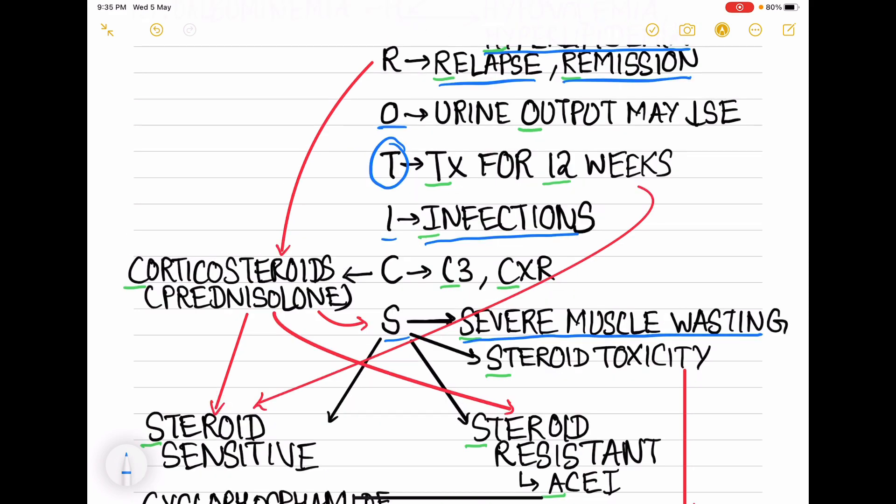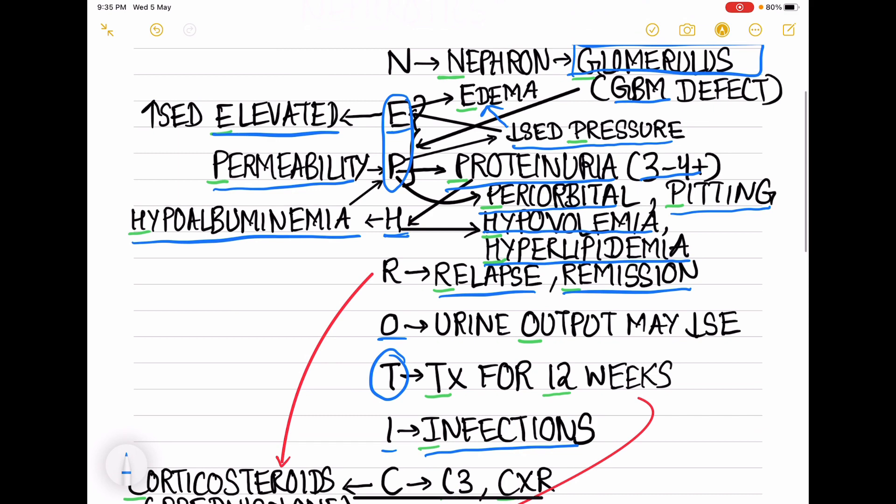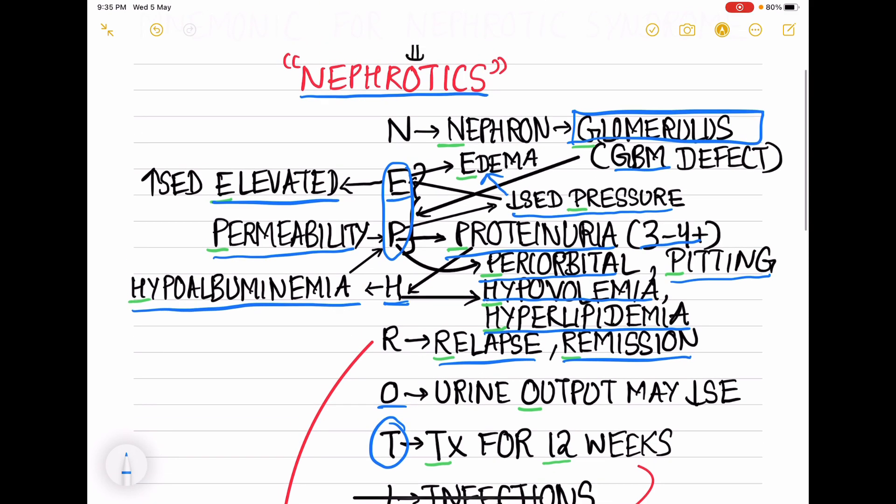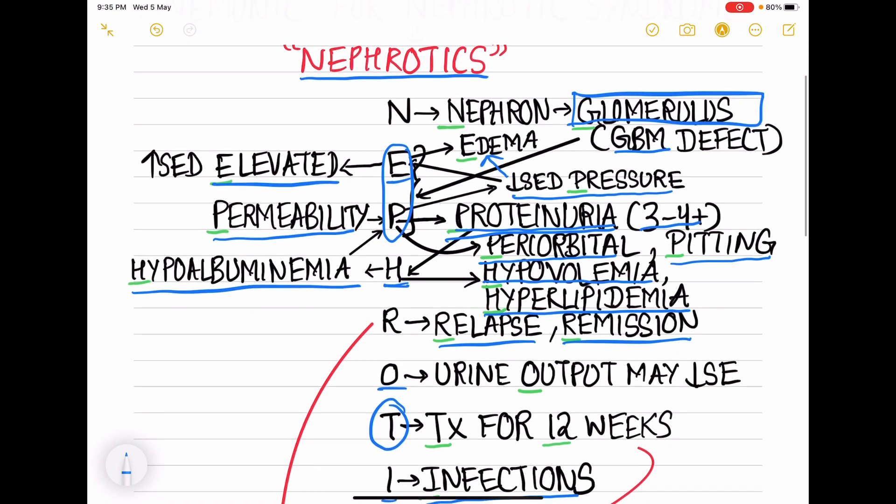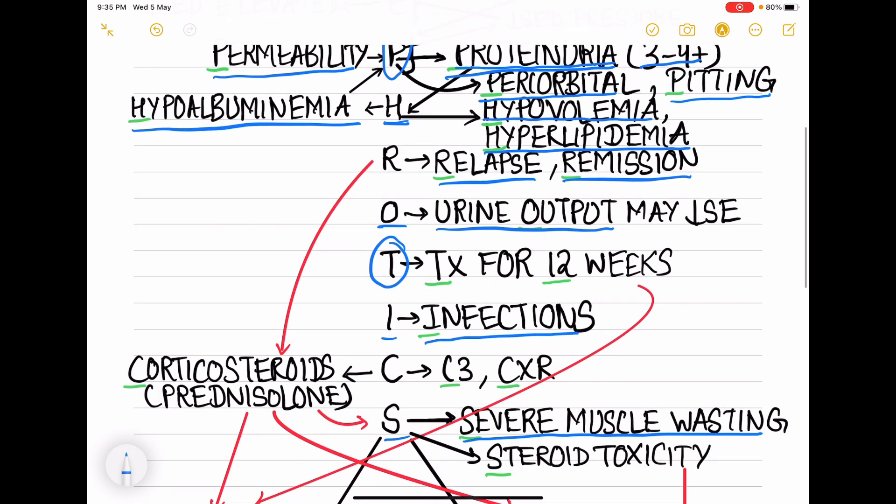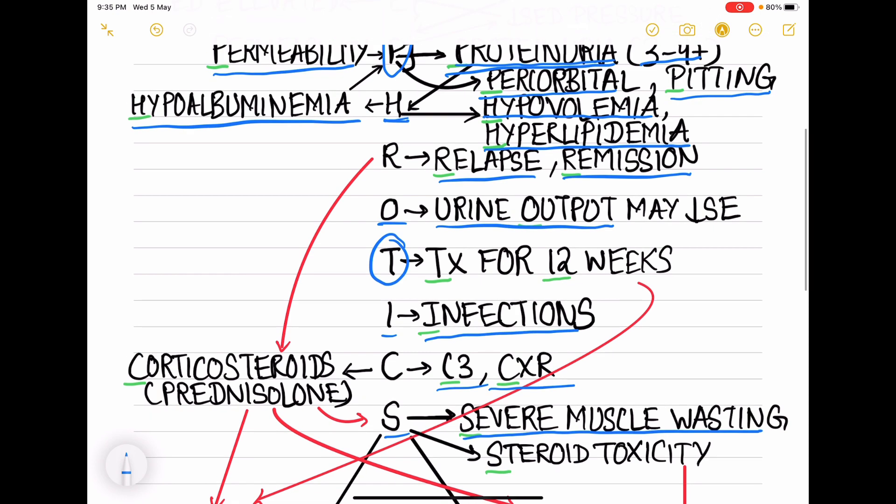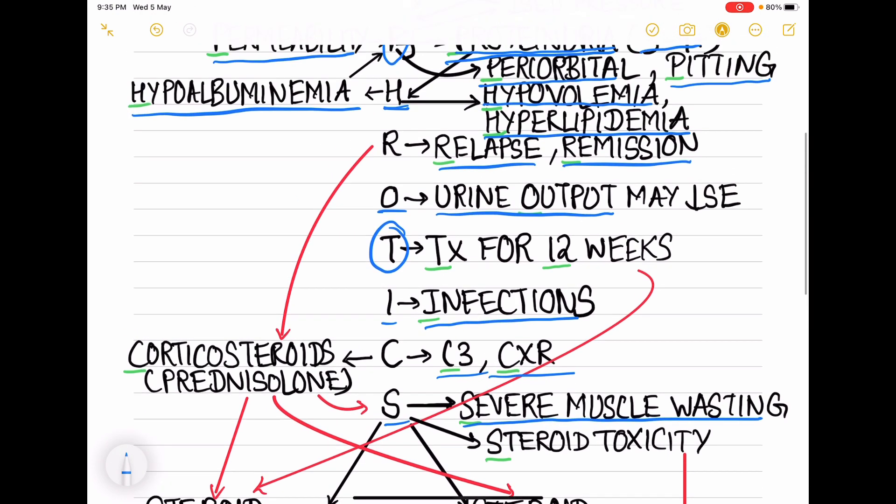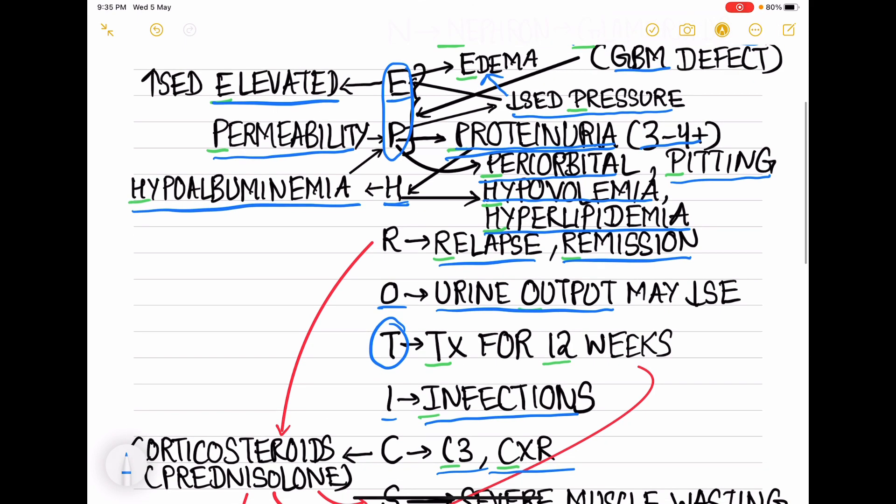Now coming to the investigations for nephrotic syndrome. First is proteinuria which I have already mentioned - that is P for proteinuria, 3 plus or 4 plus. Next, we look for urine output - that is O for urine output. Then we will do chest X-ray, then C3 levels - that is complement C3 levels. These are the investigations basically which we do in nephrotic syndrome.